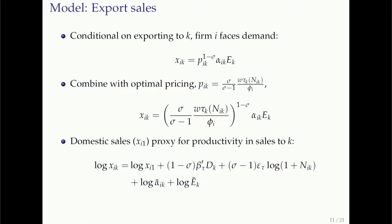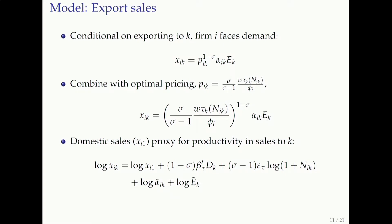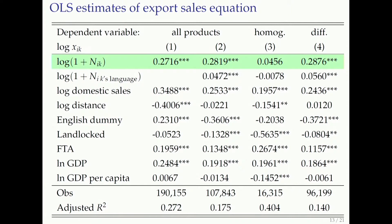Conditional on exporting to a country, a firm's log export sales are related to domestic sales — a control for size and productivity — destination-specific characteristics related to costs, and the component of cost related to immigrant employment. We can state the same thing about entry: since there's a fixed cost, firms must be profitable enough to enter. Entry is modeled as a probabilistic statement. If immigrant hiring is uncorrelated with the unobserved error, we can run OLS on the sales equation and a probit or linear probability regression on the entry equation to get estimates of the two costs.